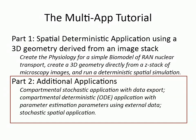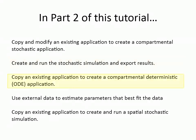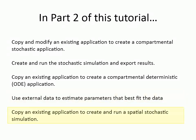If you have not yet done so, you may wish to go back to part 1 of the tutorial, in which we develop the biomodel of RAN nuclear transport and then create a spatial deterministic application using a 3D geometry derived from an image stack. This tutorial will first create a compartmental stochastic application and export the data. We will then create a compartmental deterministic or ODE application and use the exported data to demonstrate parameter estimation using the capacity tools within Virtual Cell. Finally we will create a stochastic spatial application of the biomodel.